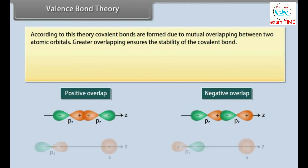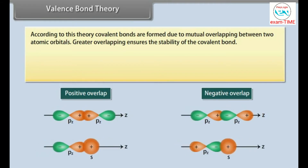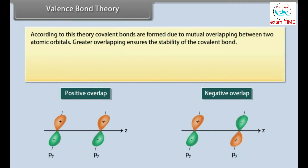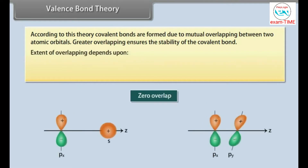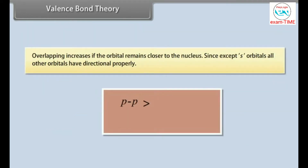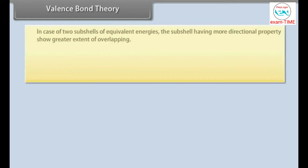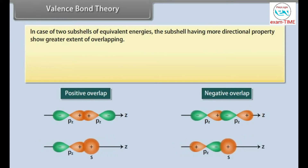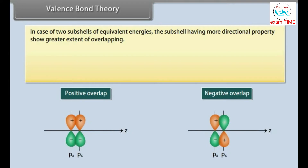According to Valence Bond Theory, covalent bonds are formed due to mutual overlapping between two atomic orbitals. Greater overlapping ensures the stability of the covalent bond. The extent of overlapping depends upon the nature of orbitals and the nature of overlapping. Overlapping increases if the orbital remains closer to the nucleus. Since, except S orbitals, all other orbitals have directional property, the subshell having more directional property shows greater extent of overlapping.